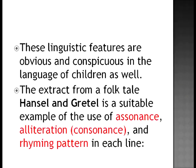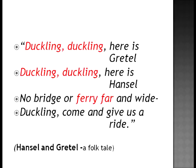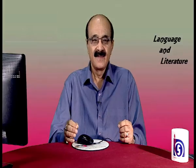These linguistic features are obvious and conspicuous in the language of children as well. Let's take an extract from a folk tale, Hansel and Gretel. It is a suitable example of the use of assonance, consonance, and rhyming pattern in each line: 'Duckling, duckling, here is Gretel. Duckling, duckling, here is Hansel. No breeze or fairy far and wide. Duckling, come and give us a ride.' Mark the repetition of the 'd' sound — 'duckling, duckling' — this is consonance or alliteration. Again, 'fairy far' features the 'f' sound.